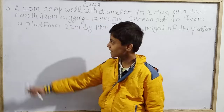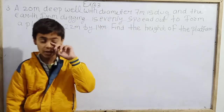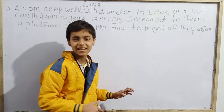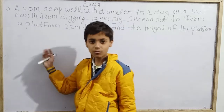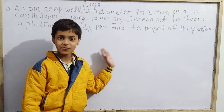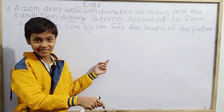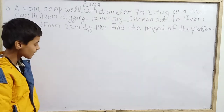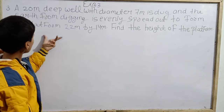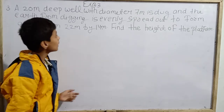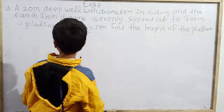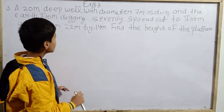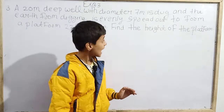Today we are going to solve question number 3rd and 4th from exercise 13.3, class 10th NCERT mathematics. Today we are mainly solving question number 3rd, which asks: a 20 meter deep well with diameter 7 meter is dug and the earth from digging is evenly spread out to form a platform 22 meter by 14 meter. Find the height of the platform.